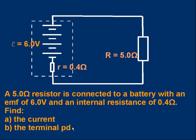What you've got to find is the current in the circuit and the terminal PD. That's the voltage between the terminals of the battery. If you pause the video you could have a go yourself. We'll go through it in a moment.